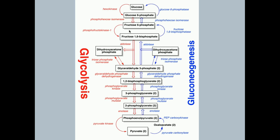In glycolysis, we start by consuming ATP. We consume ATP going from glucose to glucose-6-phosphate, and again from fructose-6-phosphate to fructose-1,6-bisphosphate. At that point, the six-carbon sugar splits into two three-carbon sugars: dihydroxyacetone phosphate (DHAP) and glyceraldehyde-3-phosphate. Only glyceraldehyde-3-phosphate can continue down the glycolysis chain — DHAP must first be converted to glyceraldehyde-3-phosphate.